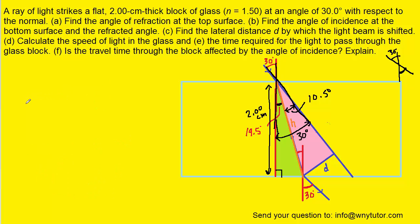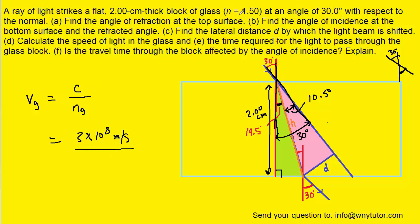Now for part D, the speed of light in glass equals the speed of light divided by the index of refraction of the glass. The speed of light is 3 times 10 to the eighth meters per second, and the index of refraction of glass was given as 1.5. Working that out gives 2 times 10 to the eighth meters per second — the correct answer to part D.